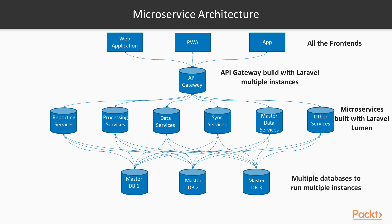If one unit is not available, still all other units are functioning — that means your whole application is not going down. That's the benefit of microservice architecture.